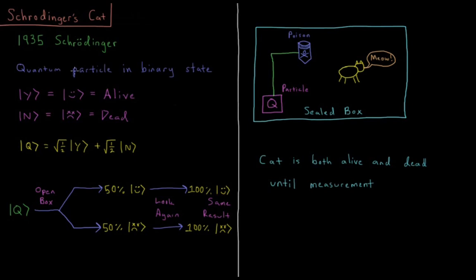Let's say we have a quantum particle in a binary state. It's 50% probability that it has decayed and 50% probability that it hasn't decayed.